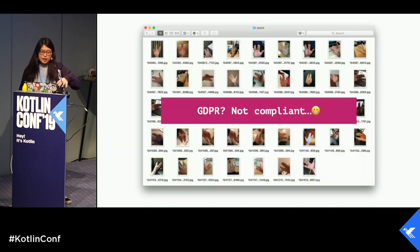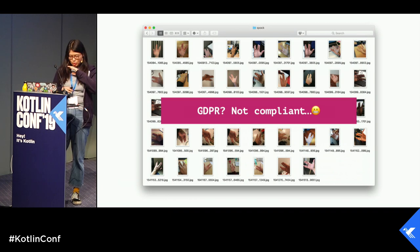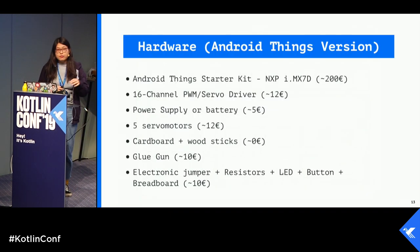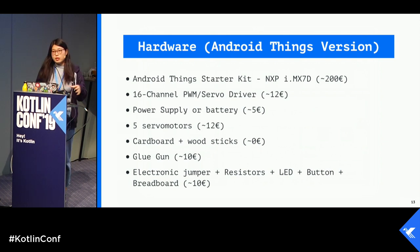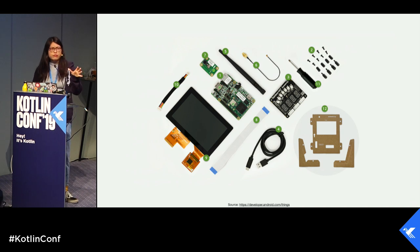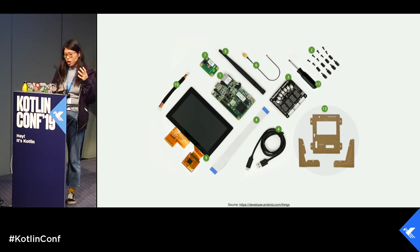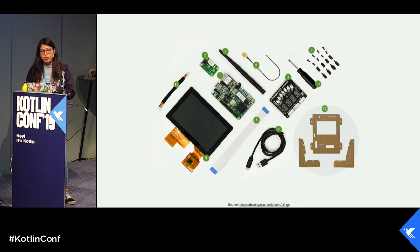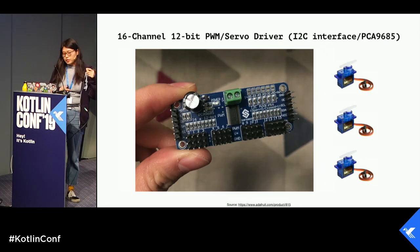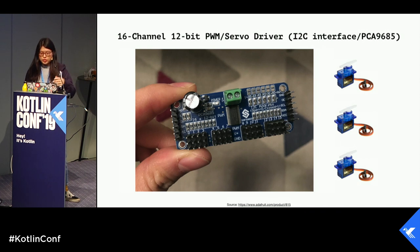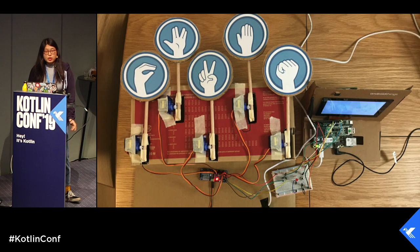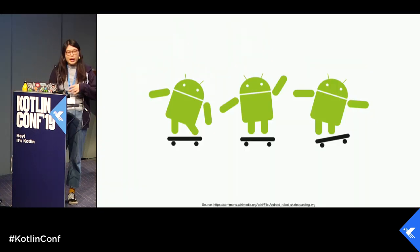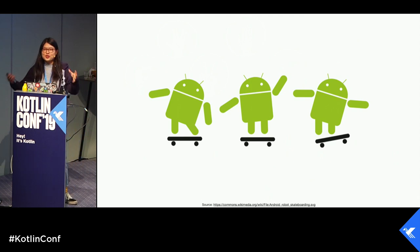I stored the photos on Firebase, then trained the model on my own computer — which is totally not legit if you want to use it in production. For the hardware part, I used a really low budget because I already had Android Things, and the other components you can find easily on Amazon. I also used a 16-channel driver to control different servo motors. During a weekend, using my glue gun and some other things I found, I ended up building this. I was pretty happy and thinking I could present it everywhere.